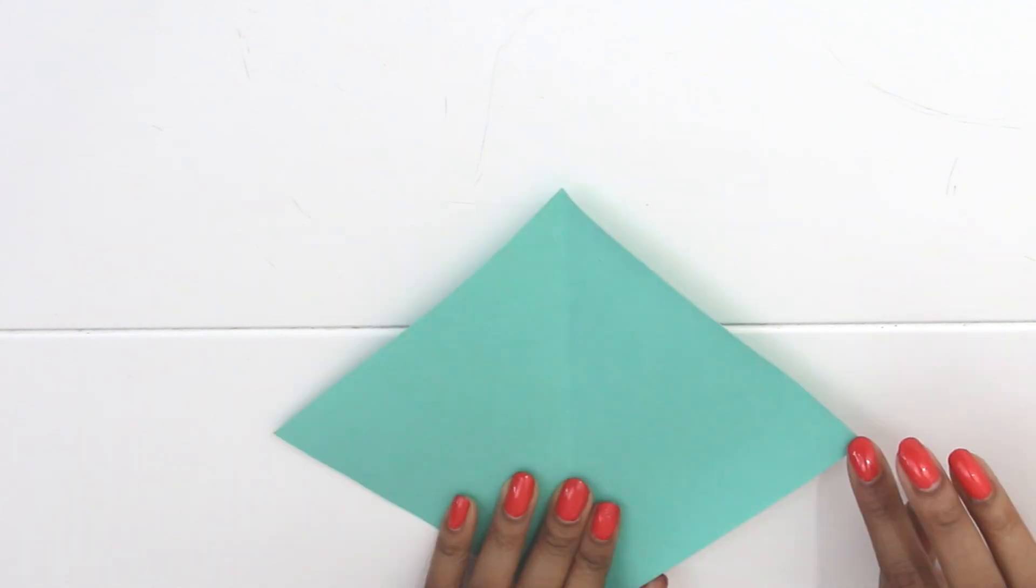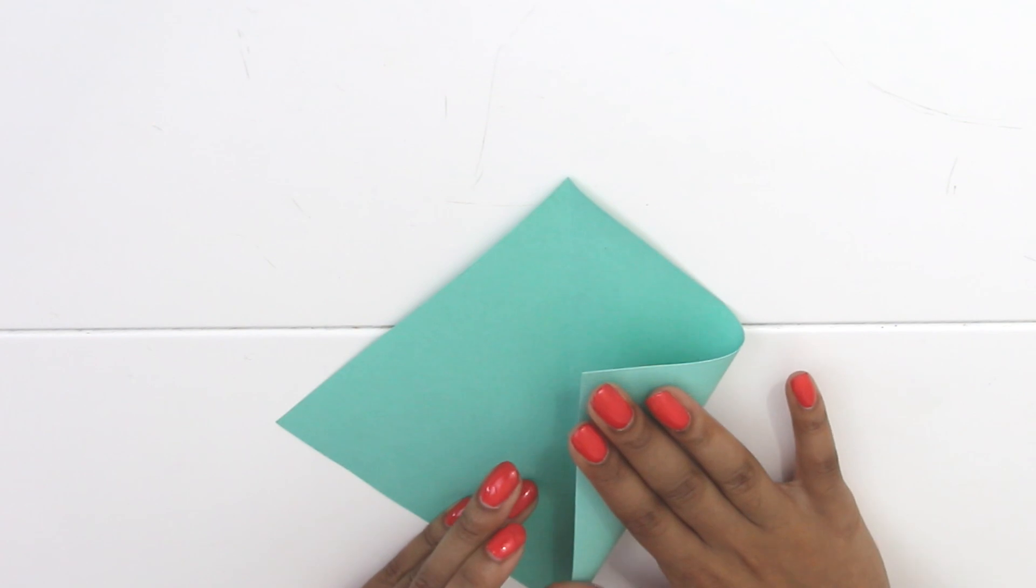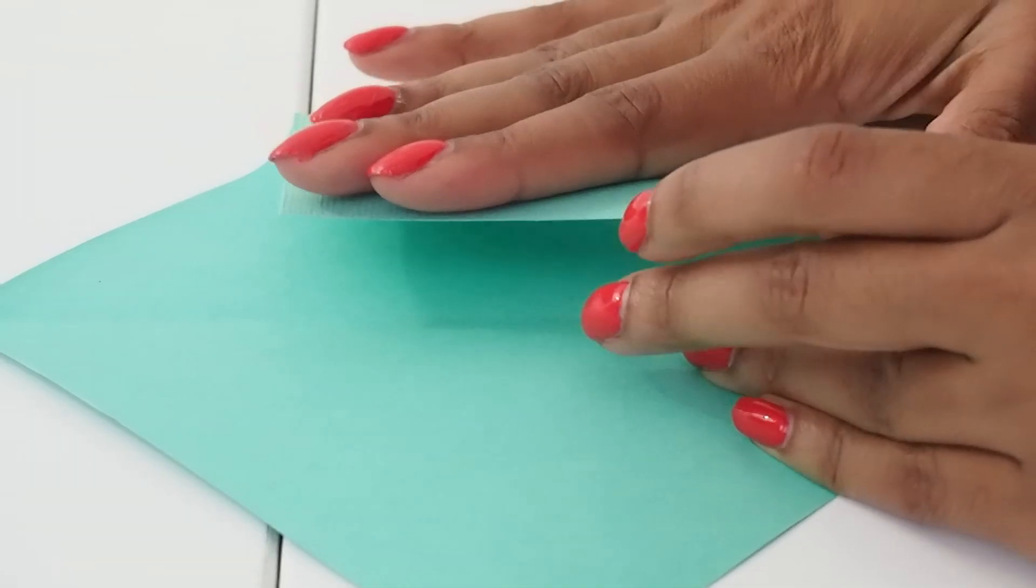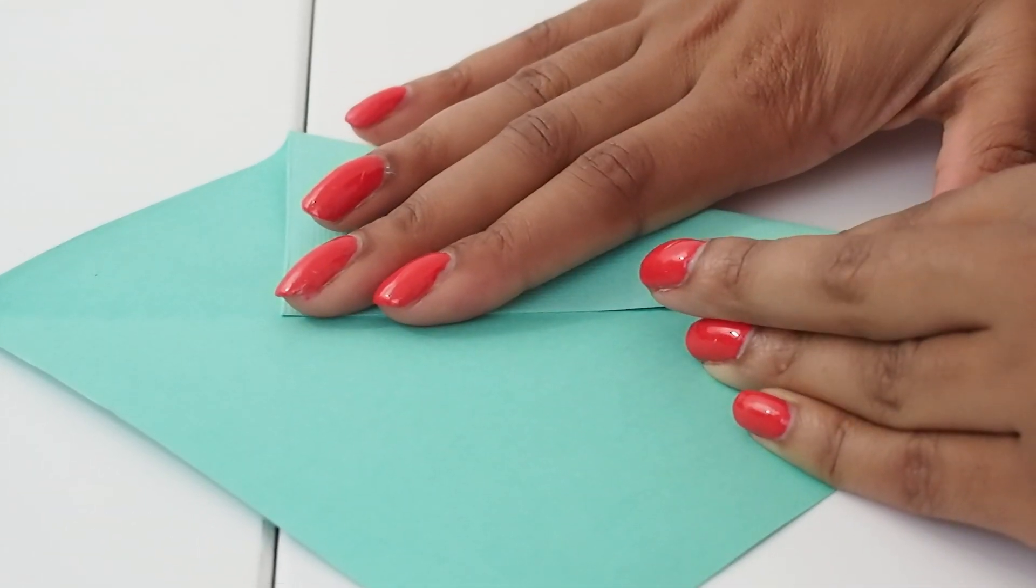And now we're going to fold the sides along the repair. So we're doing it from the two sides, and at the end it must look like a kind of diamond.